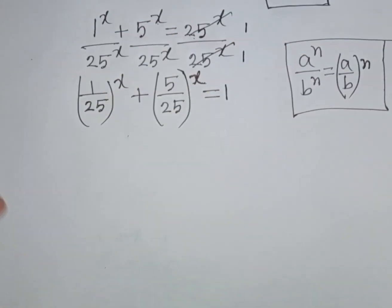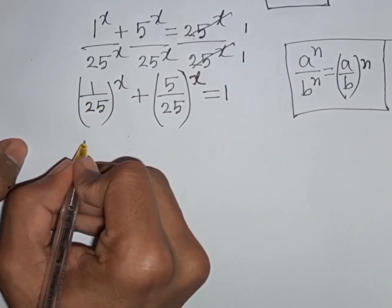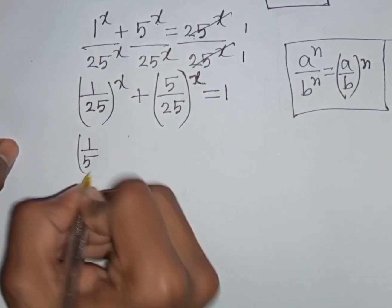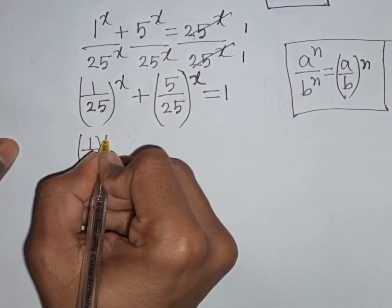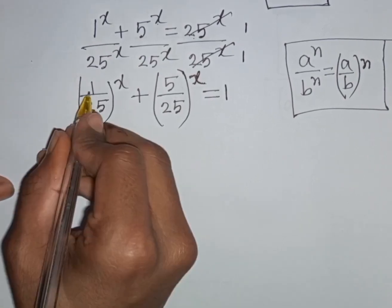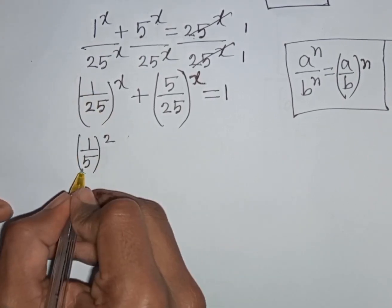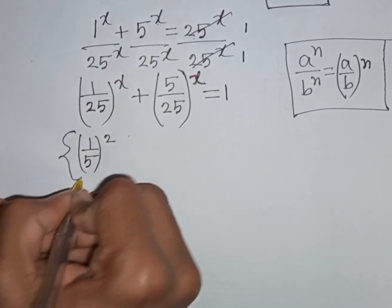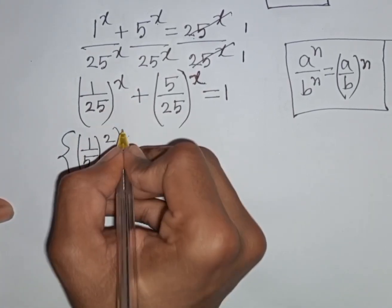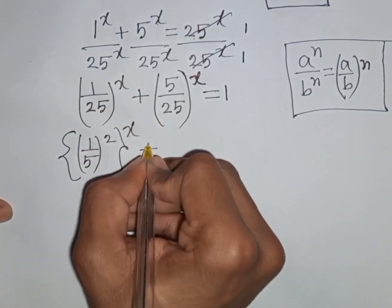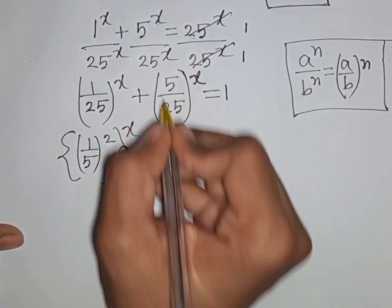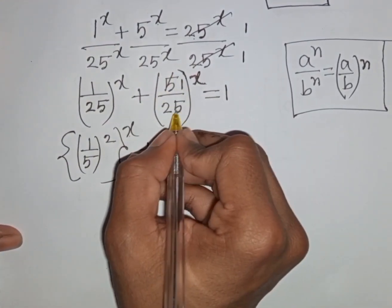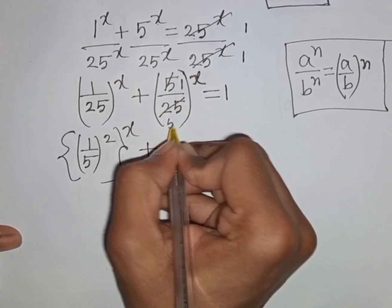Now 1/25 can be written as (1/5)². So 1² = 1 and 5² = 25. Then the first bracket (1/25)^x becomes (1/5)^(2x), and 5/25 simplifies to 1/5.